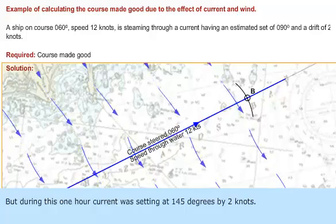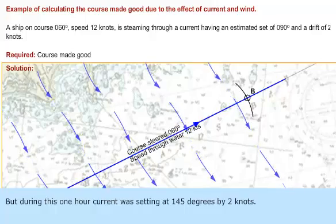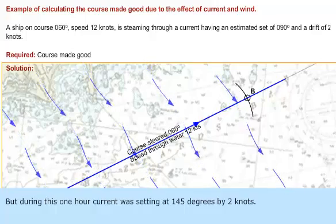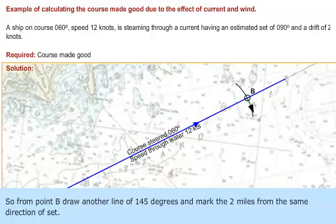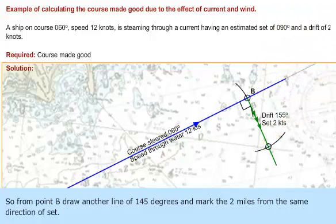But during this one hour, current was setting at 145 degrees by 2 knots. So from point B, draw another line of 145 degrees and mark 2 miles in the same direction offset.